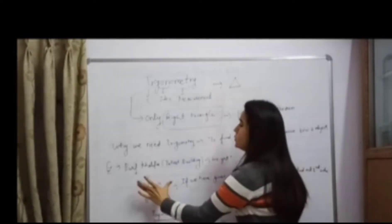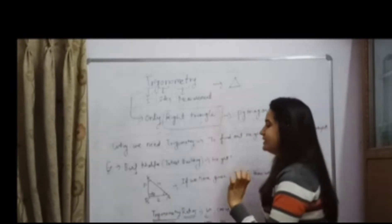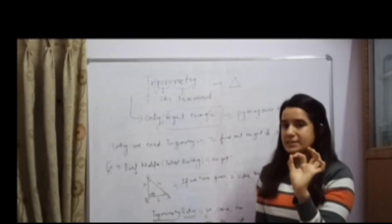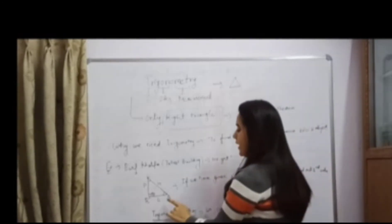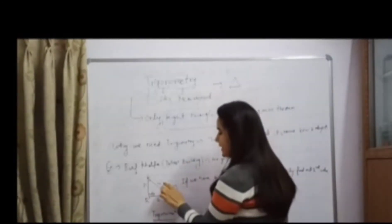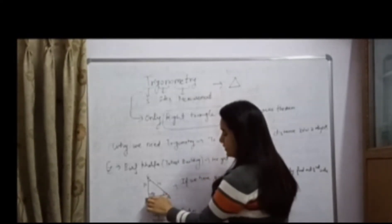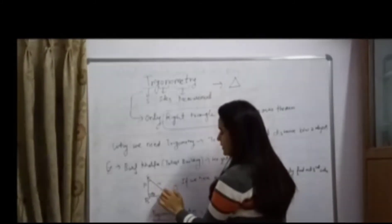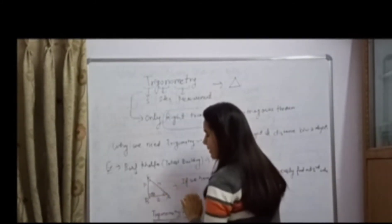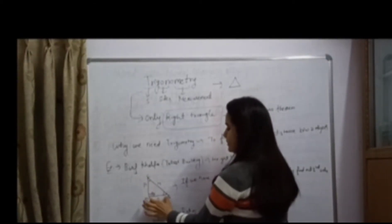What is a right triangle? Trigonometry only comes with right triangles. A right triangle means having a 90-degree angle between two sides — that is the fixed angle. So AB and BC have a 90-degree angle, and the side in front of the 90-degree angle will be the hypotenuse. The angle which is between the base and hypotenuse — the front side of this angle will be the perpendicular, which is BC, and this will be the base.